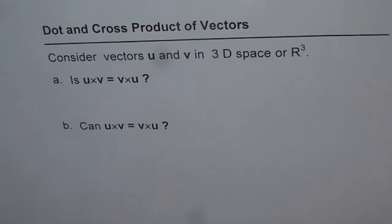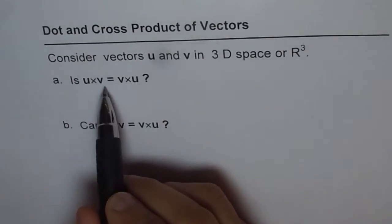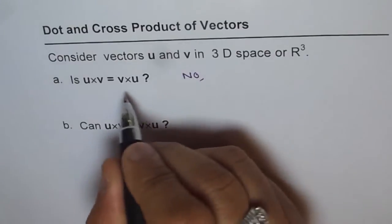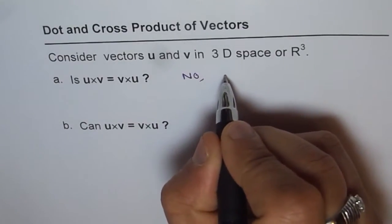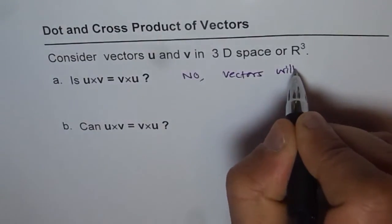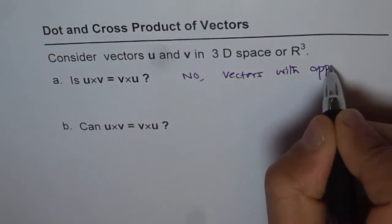So the answers are: is u cross v equals to v cross u? The answer is no, since the direction will be opposite. They are vectors with opposite directions.